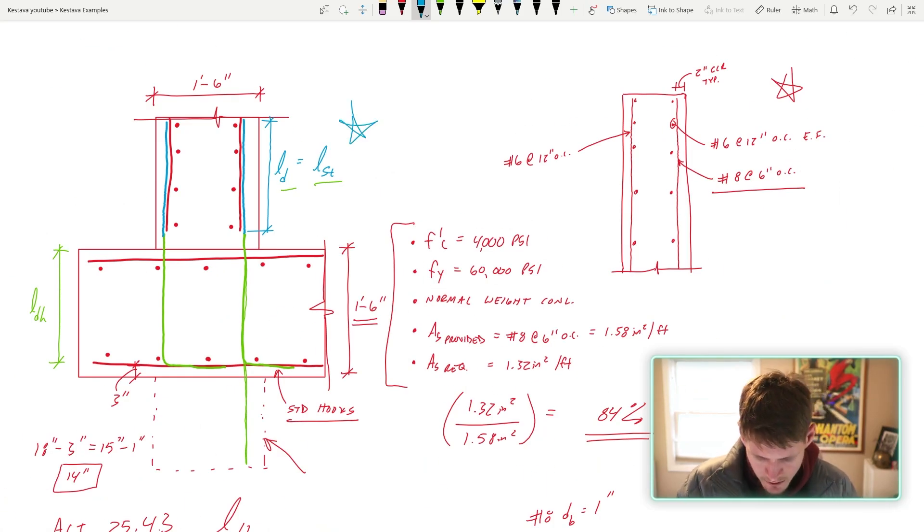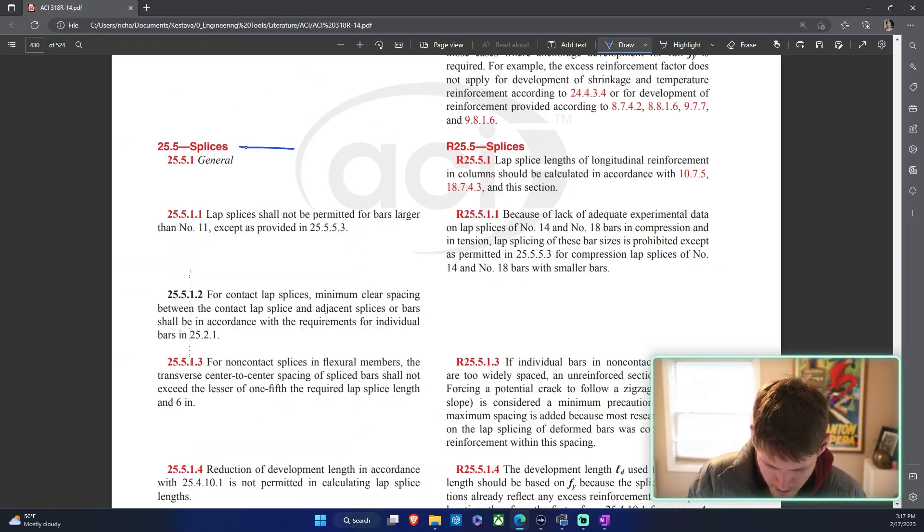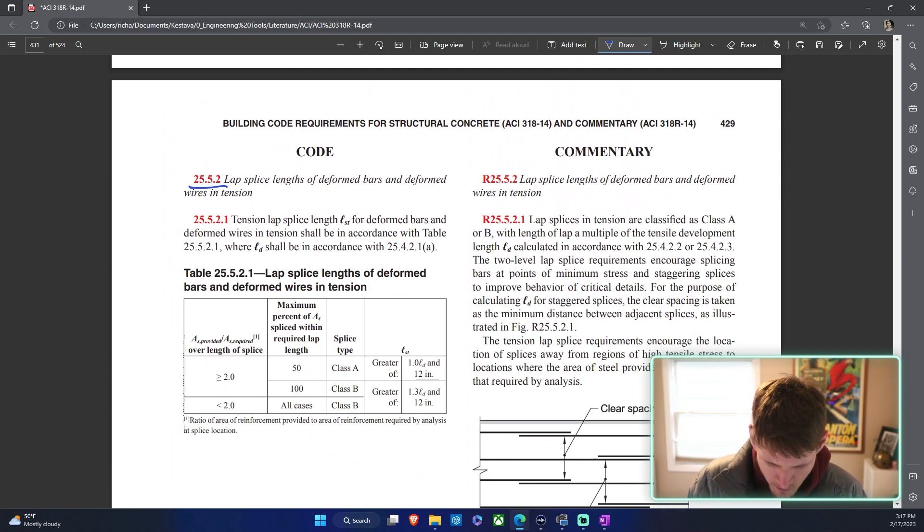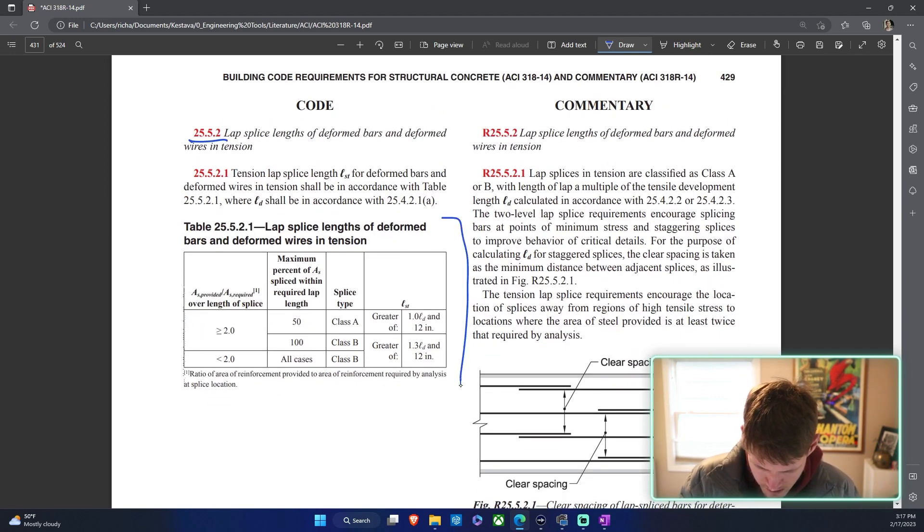We're back at our problem, now we're going over the blue section. L sub d equals l sub st. You're like, well how do you know that those equal one another? Well let's quickly take a look at the ACI. We're going to find ourselves in section 25.5 because we're doing a lap splice. Now you're going to specifically head to 25.5.2, lap splice lengths of deformed bars and deformed wires in tension.